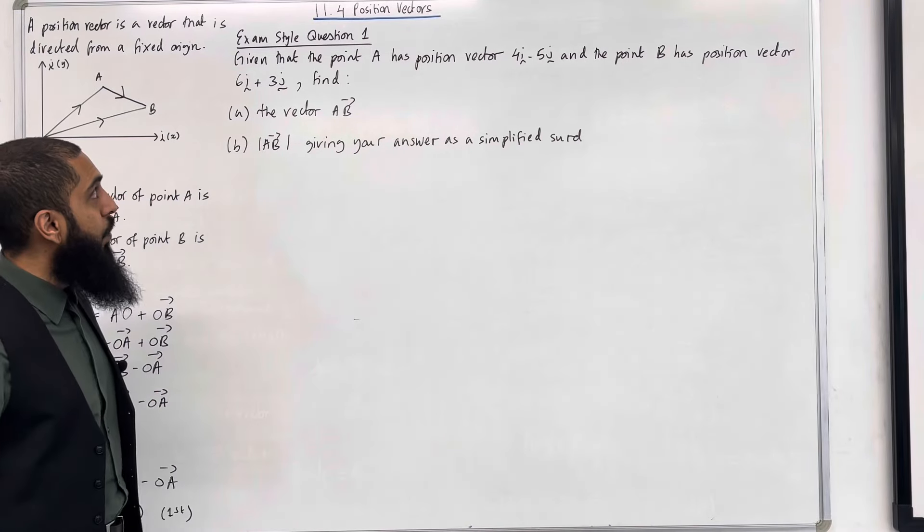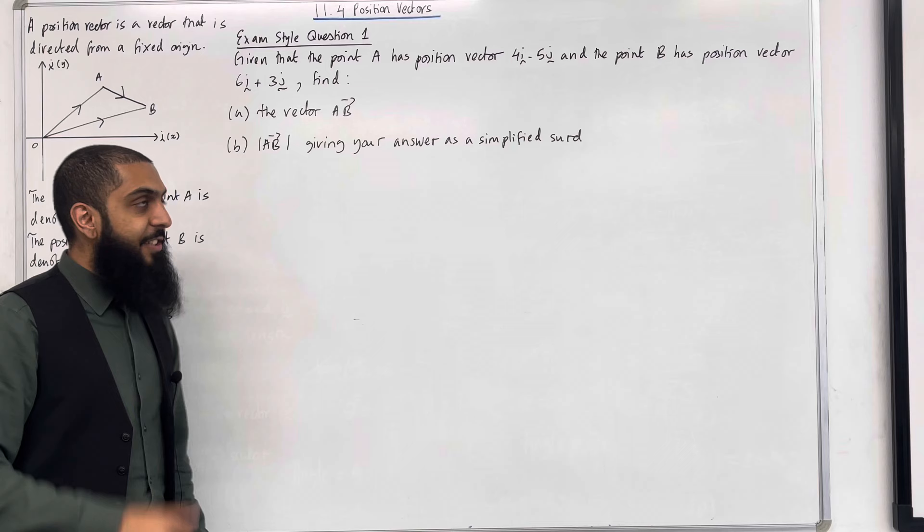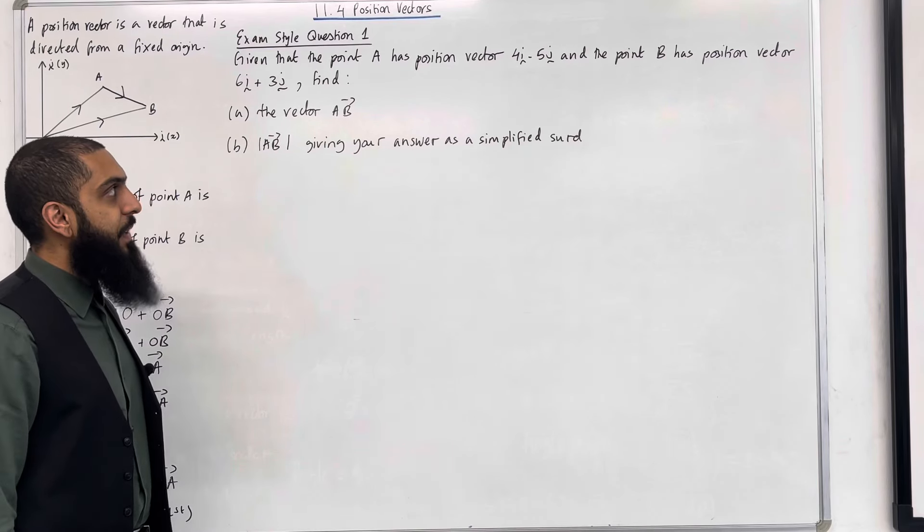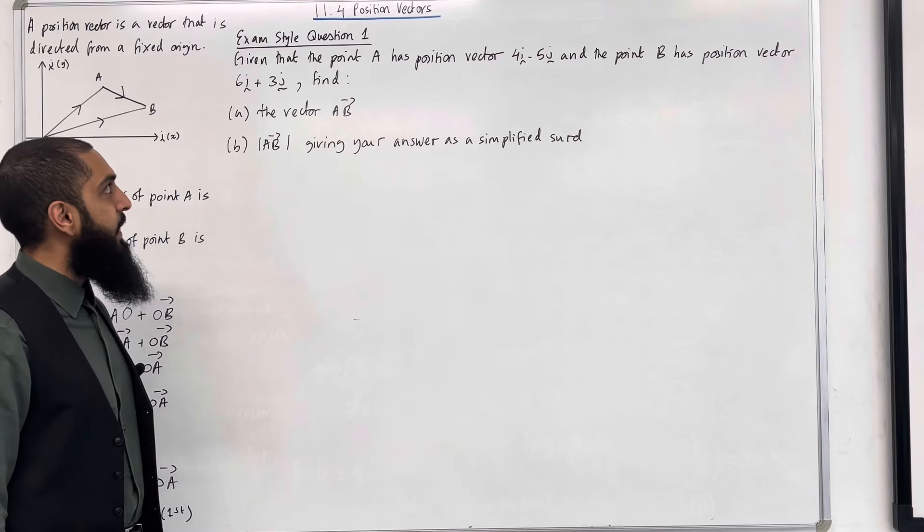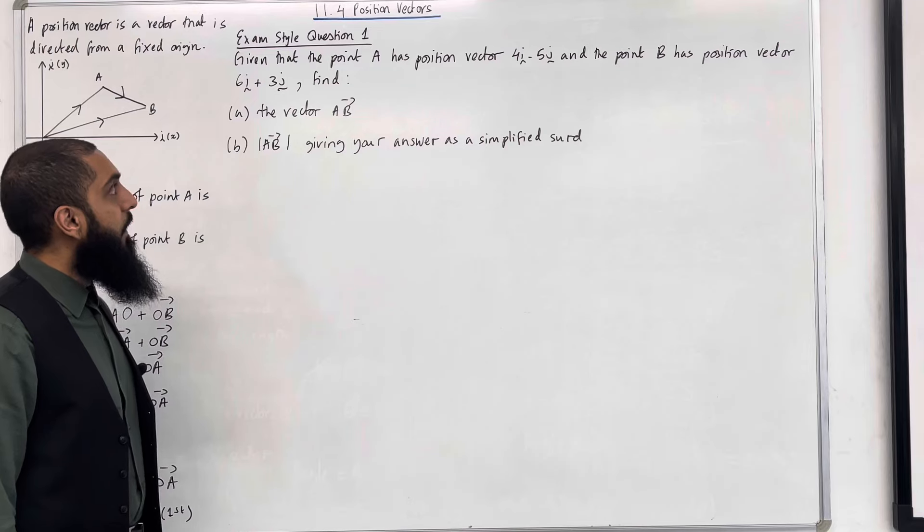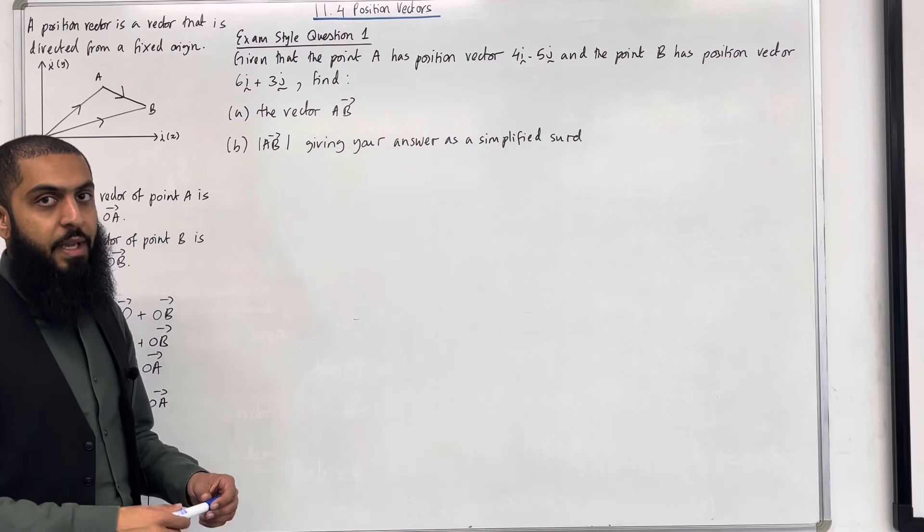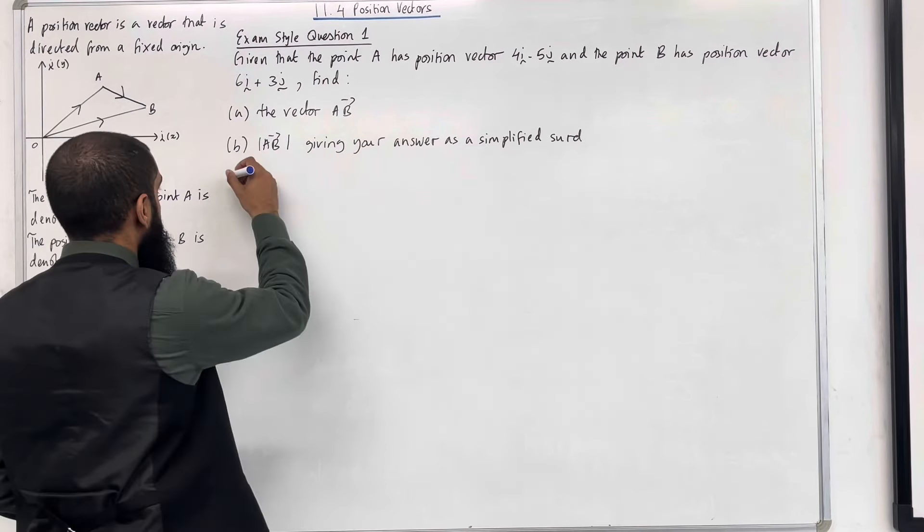Here is exam style question 1. Given that point A has position vector 4i minus 5j and the point B has position vector 6i plus 3j, find part A the vector A to B. So let's have a look at the solution to part A.